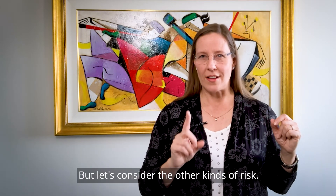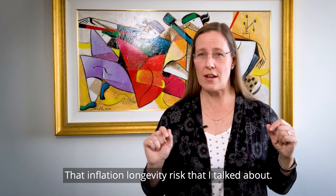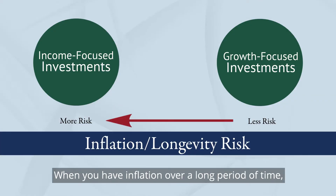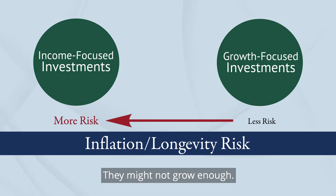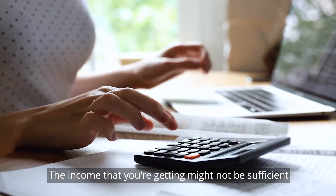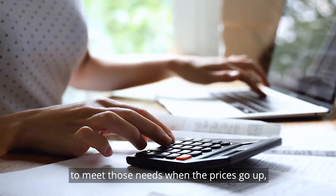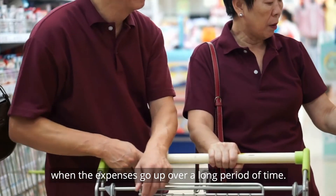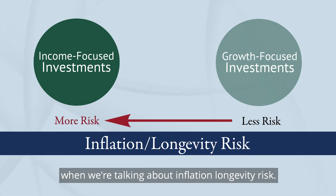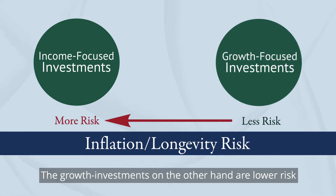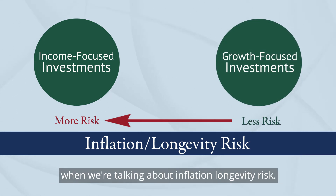Let's consider the other kinds of risk — that inflation and longevity risk. When you have inflation over a long period of time, investments that don't grow might run out. They might not grow enough. The income that you're getting might not be sufficient to meet those needs when prices go up, when expenses go up over a long period of time. So income-focused investments have a higher risk when we're talking about inflation and longevity risk. Growth investments, on the other hand, are lower risk when it comes to inflation and longevity risk.